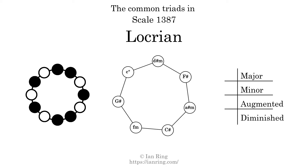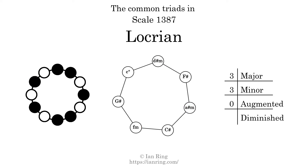Here are the common triads present in this scale. The diagram in the center is a graph of parsimonious voice leading between triads. There are three major triads, three minor triads, no augmented triads, and one diminished triad. Here is a Hamiltonian path of parsimonious voice leading that uses all the triads.